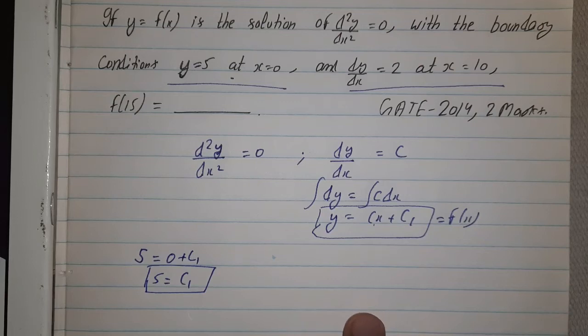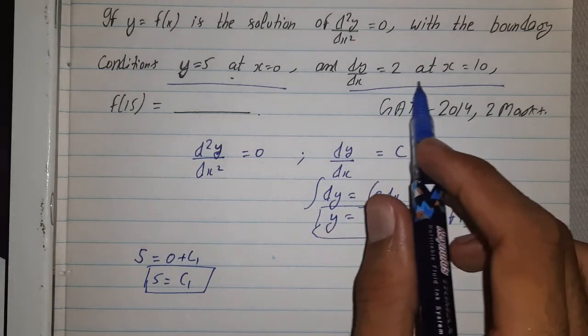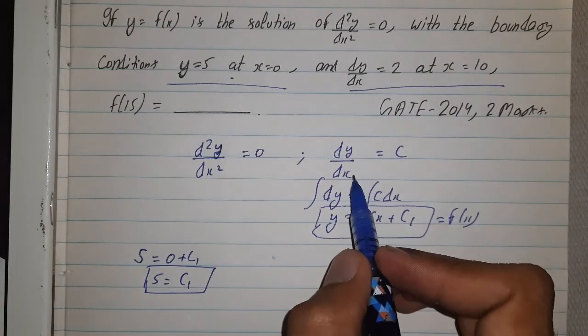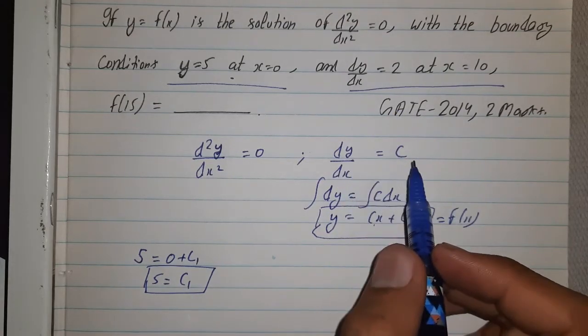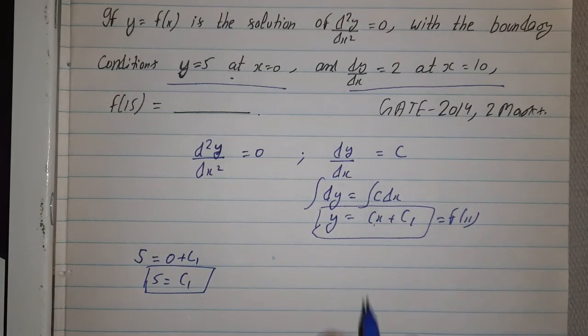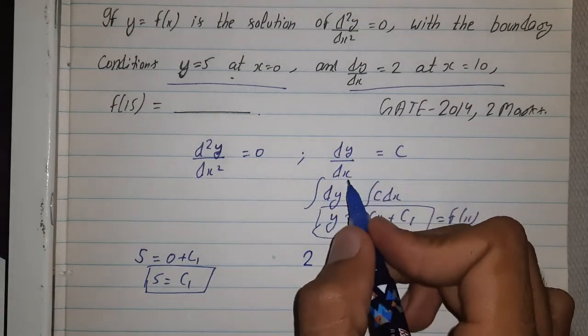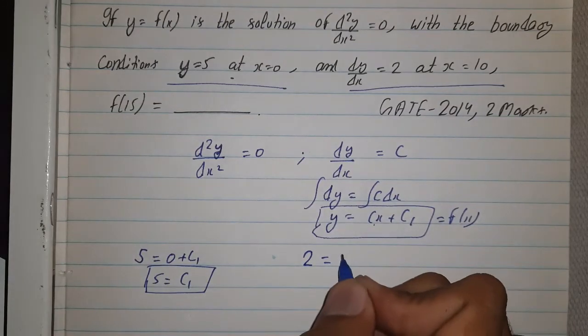And another is dy/dx = 2 at x = 0. So value of dy/dx is equal to 2. So dy/dx = 2, we will equate dy/dx = 2 and this is equal to c.